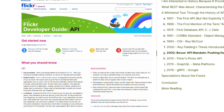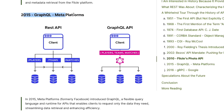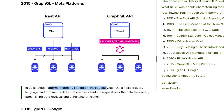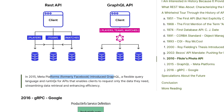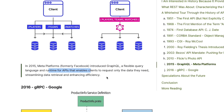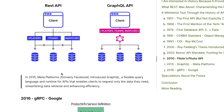Status codes, headers, how POST requests are used for sending data over HTTP — all of that was already mature. Then came 2015, where GraphQL entered the picture. Facebook introduced GraphQL in 2015 — a flexible query language and runtime for APIs that enables clients to request only the data they need, streamlining data retrieval and enhancing efficiency.